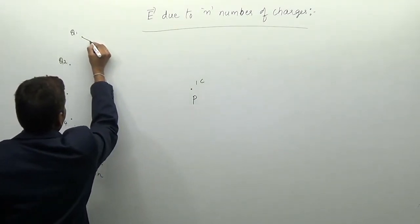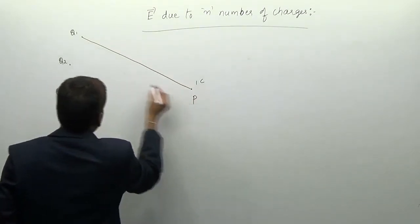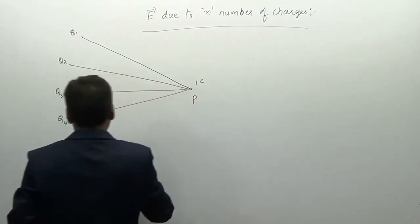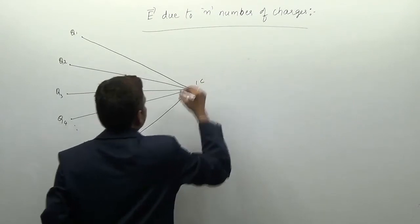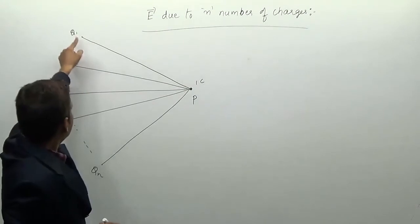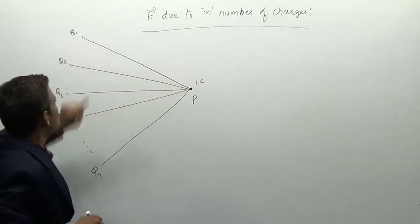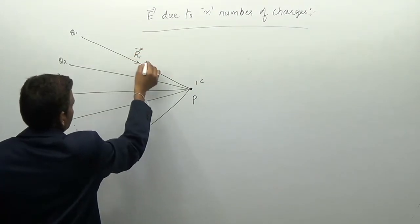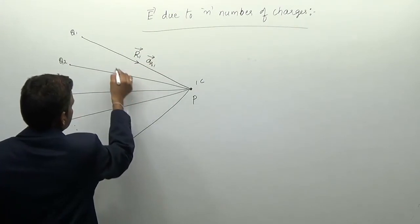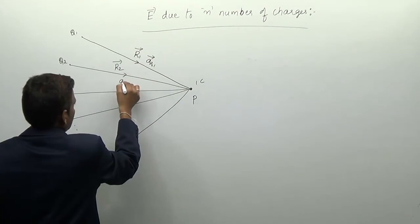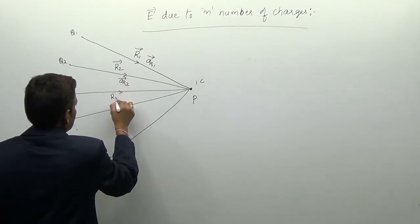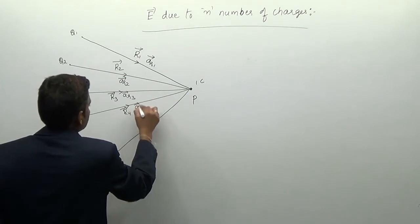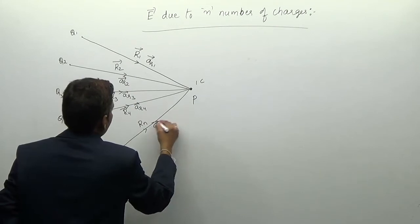To find the electric field intensity, we draw lines joining each charge to point P. At point P, the electric field intensity due to Q1 is E1, the distance between them is R1, and the unit vector in that direction is AR1. Similarly, the distance from Q2 is R2 with unit vector AR2, distance from Q3 is R3 with AR3, from Q4 is R4 with AR4, and from Qn is Rn with ARn.